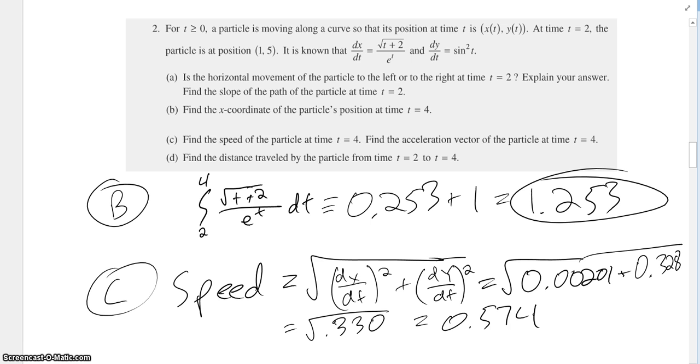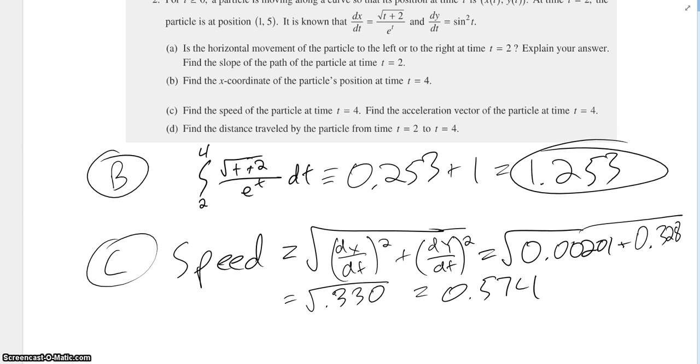Now the acceleration vector is just going to be the derivative of this with 4 plugged in, and comma, the derivative of this with 4 plugged in. So it's really simple stuff. Yeah, I'll do it off screen, but I'll be back in a second.